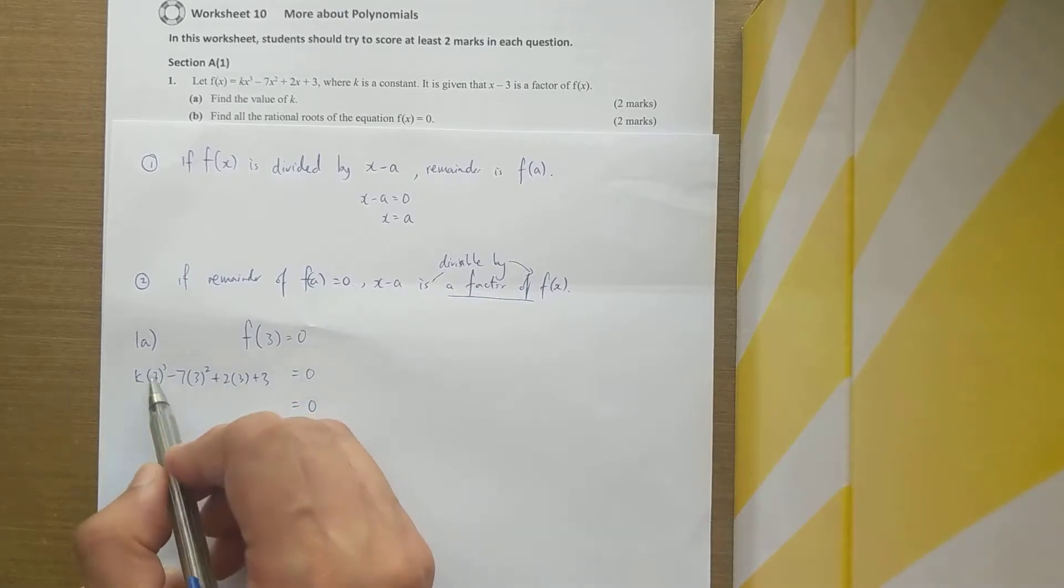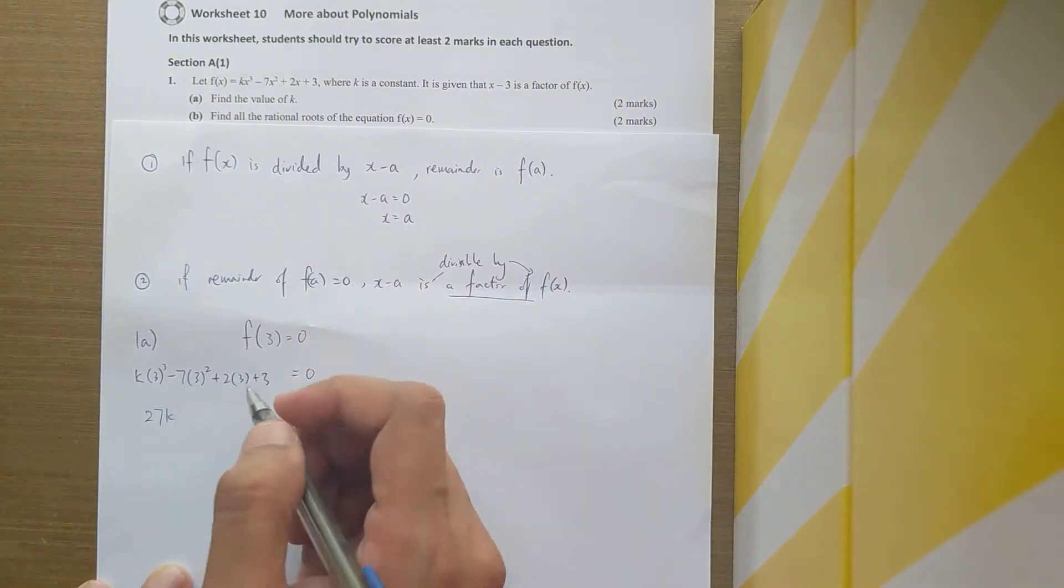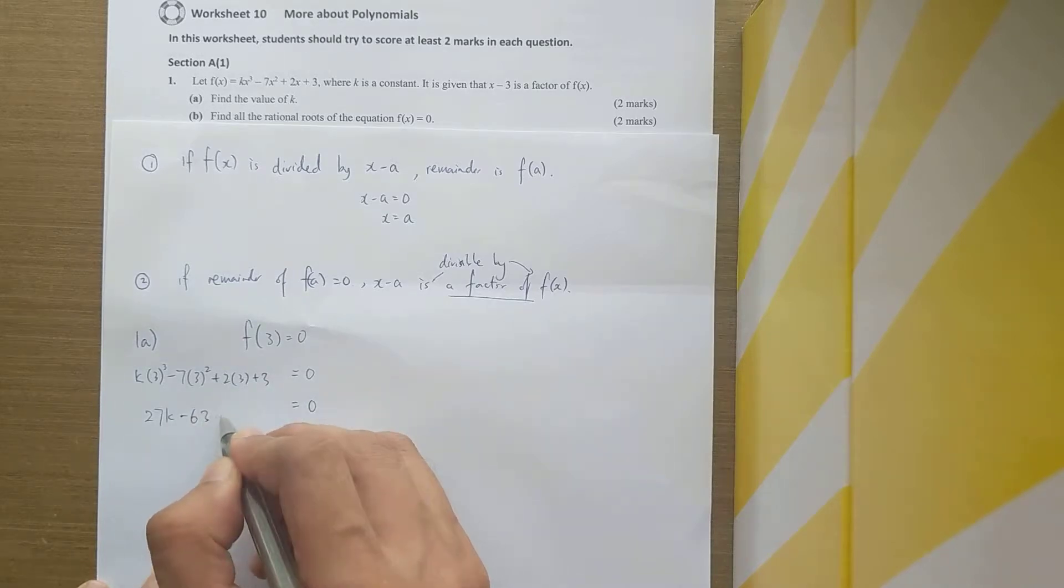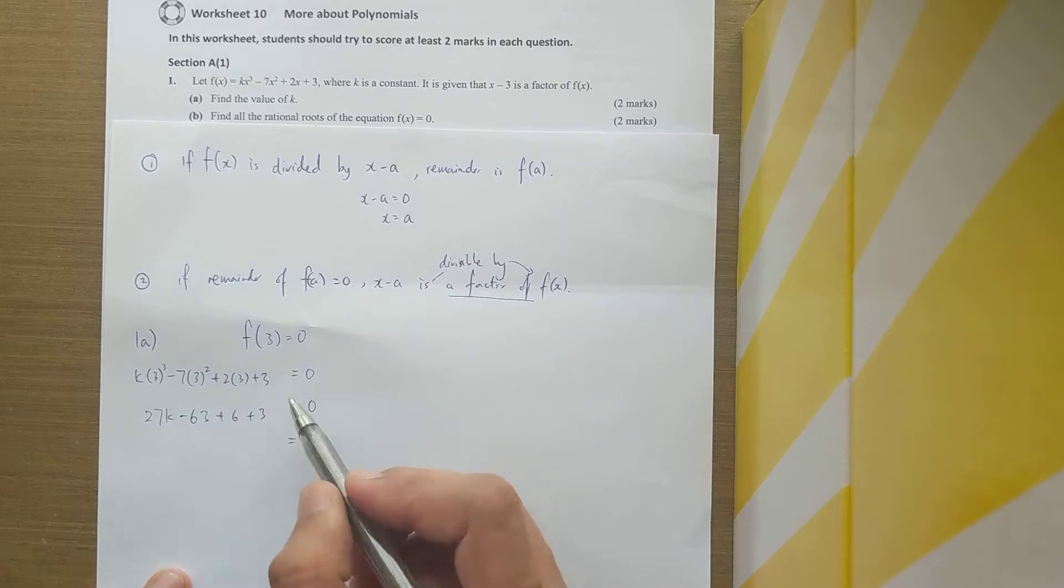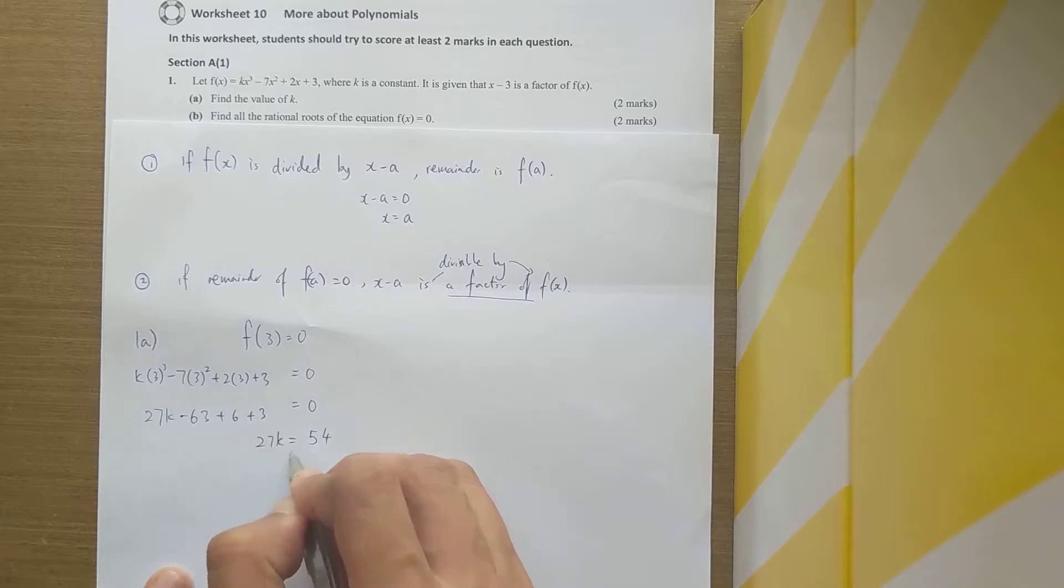27k minus 63 plus 6 plus 3 equals 0, so 27k minus 54 equals 0, and k is equal to 2. So you found part a done.